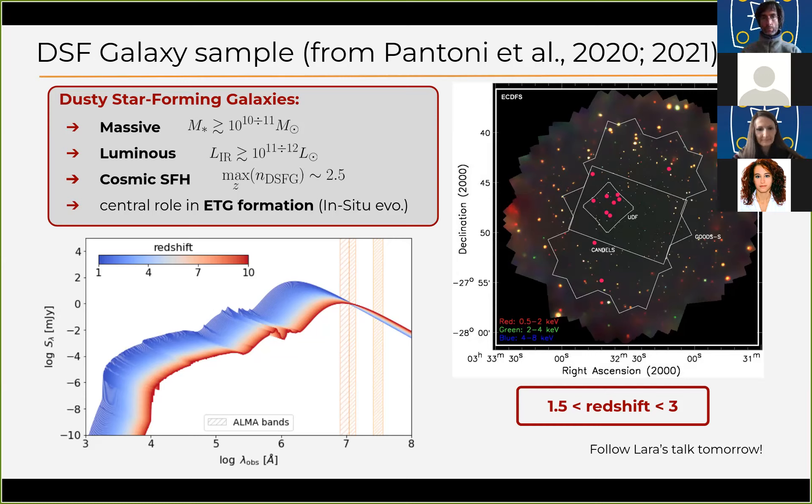These are massive objects with stellar masses above 10^10 to 10^11 solar masses. They are very luminous in the infrared with luminosities above 10^11, 10^12 solar luminosities. And their number density distribution with redshift peaks at around redshift 2.5, at the peak of cosmic star formation history. These kind of objects are thought to play a very important role on the formation of local early-type galaxies. The sample from Lara has been selected in redshift to reside in the redshift range between 1.5 and 3, and provides panchromatic fluxes spanning from the X-ray band to the radio. If you want more information about this sample of galaxies, you can follow Lara's talk tomorrow.